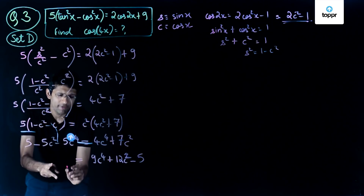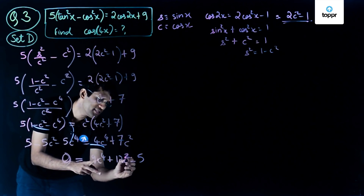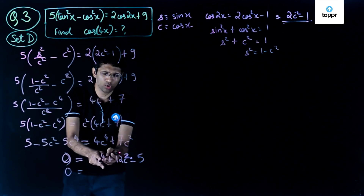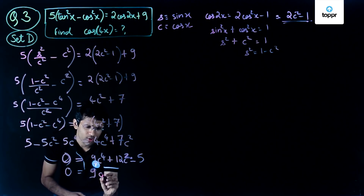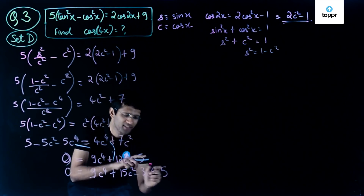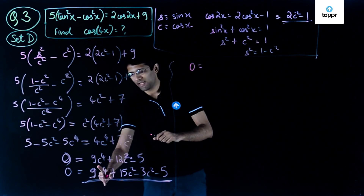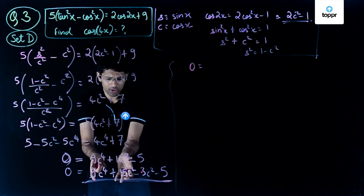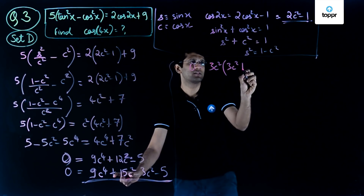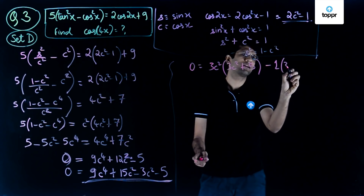We now have the equation set equal to 0, which is a quadratic in c squared. Factoring: 9c to the power 4 plus 12c squared minus 5, which can be split as 9c to the power 4 plus 15c squared minus 3c squared minus 5. Taking 3c squared common from the first two terms gives 3c squared plus 5. The remaining terms minus 3c squared minus 5 factor as minus 1 times 3c squared plus 5.